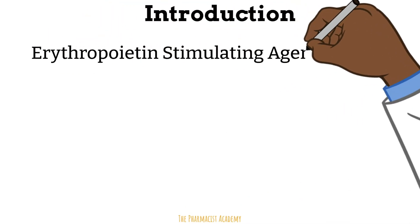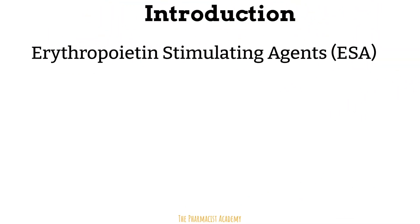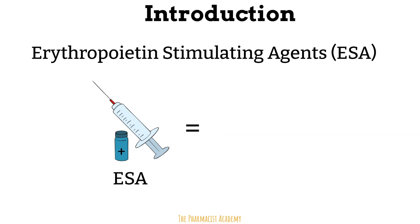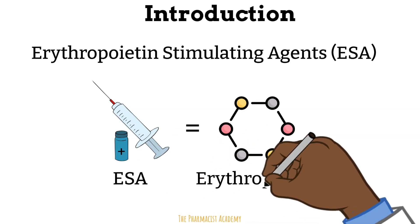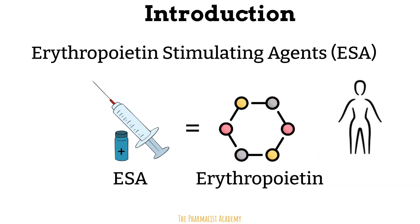Erythropoietin stimulating agents, also known as ESAs, are simply drugs that have the same mechanism and effect as erythropoietin, a naturally occurring hormone in the body. The name ESAs can be confusing and misleading because it sounds like these agents stimulate erythropoietin production, but no — when these drugs are taken, they actually go into the body and act like erythropoietin, also known as EPO.